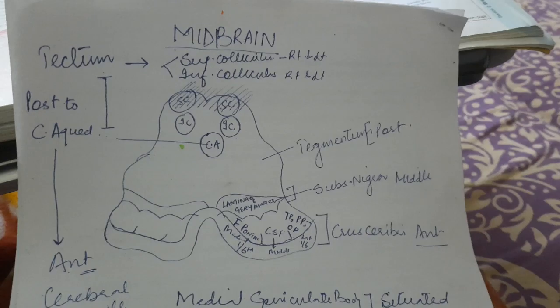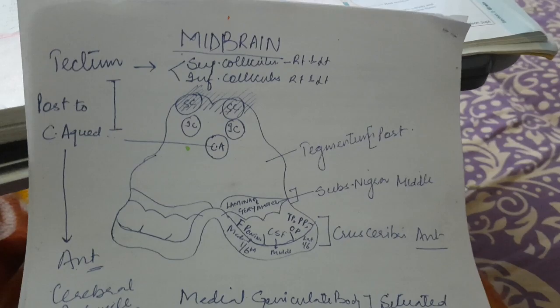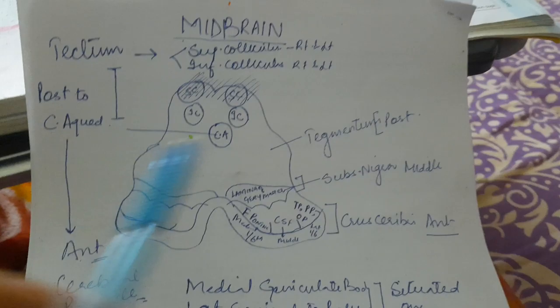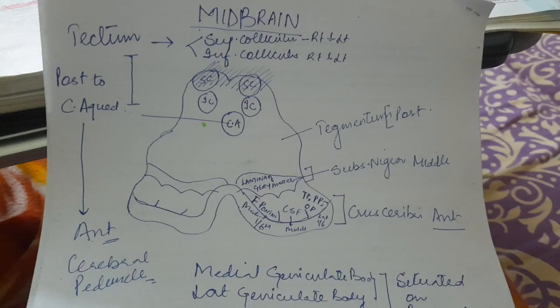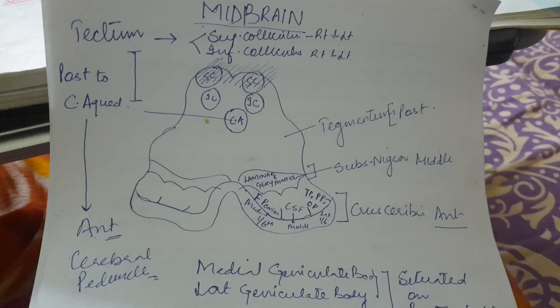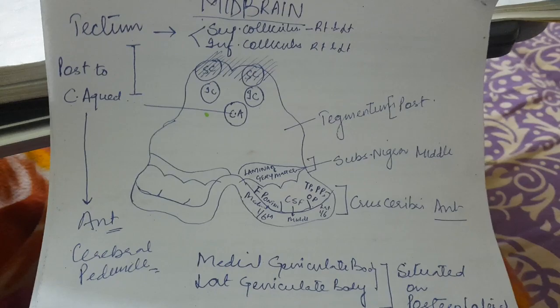Hello students, today we will talk about the anatomy of the midbrain. You already know the midbrain connects the forebrain with the hindbrain, and it is also called the mesencephalon. The important structure in the midbrain is the cerebral aqueduct — you can see in this image I have drawn a cerebral aqueduct. We will study the subdivisions of the midbrain in relation to the cerebral aqueduct. I have drawn a transverse section of the midbrain at the level of the inferior colliculus.